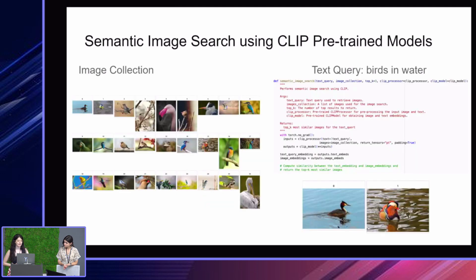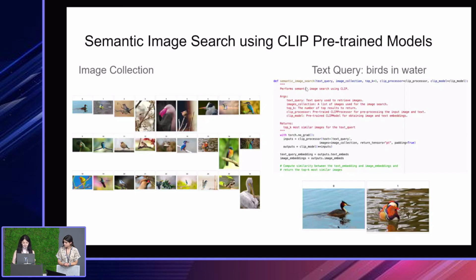We'll also see how we can use a CLIP pre-trained model loaded from the Hugging Face library. This has pre-trained image and text encoders for CLIP. We'll see how we can use this to do semantic image search — you'll have an image collection, and then the idea is to have a text query and find from the image collection the images that are most accurate for the text query. If you do this correctly, you should get the two images shown here for the text query provided in the tutorial.